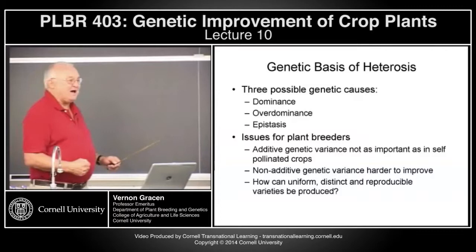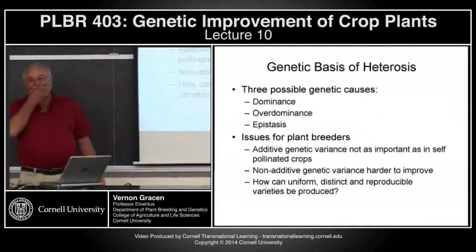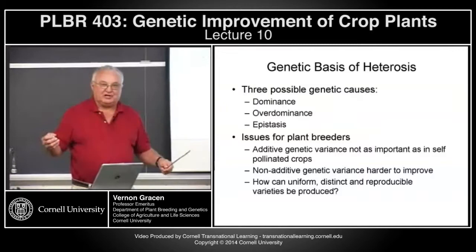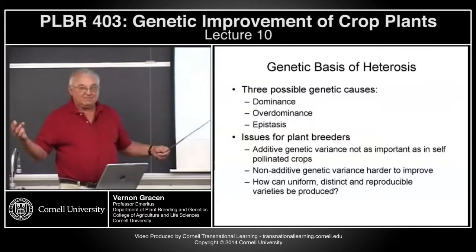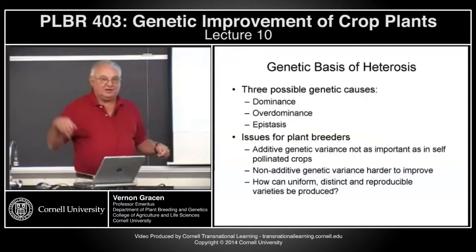How does heterosis work? Quite frankly, we don't know, but we're learning more and more. There are three possible causes: dominance, over-dominance, or epistasis. This gives us a dilemma, because when breeding self-pollinated crops, the only reliable type of genetic variance you can count on from generation to generation is additive — it doesn't concern itself with interaction of different alleles or interaction between loci.